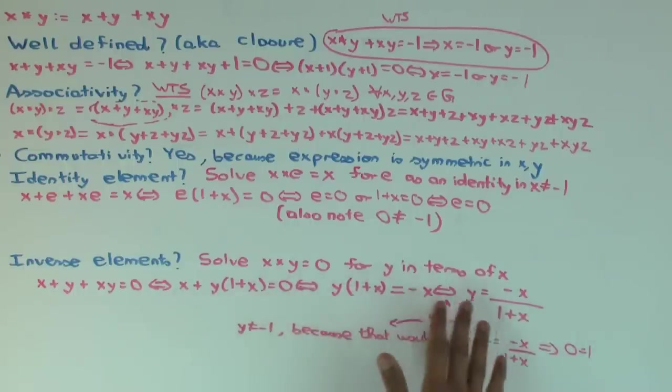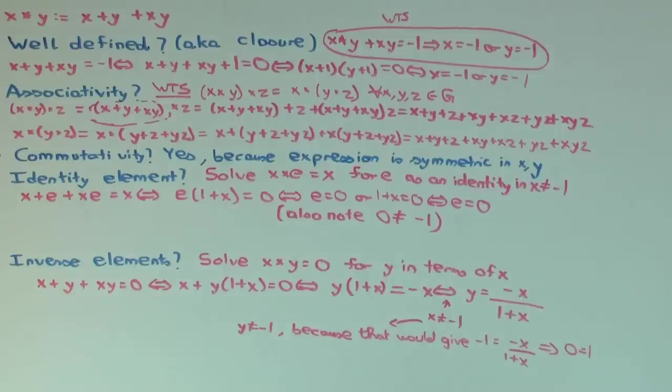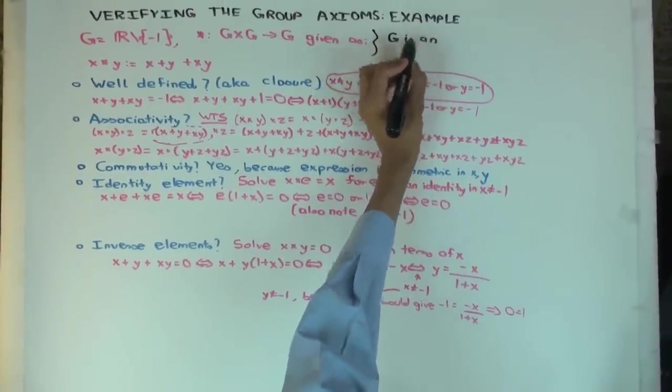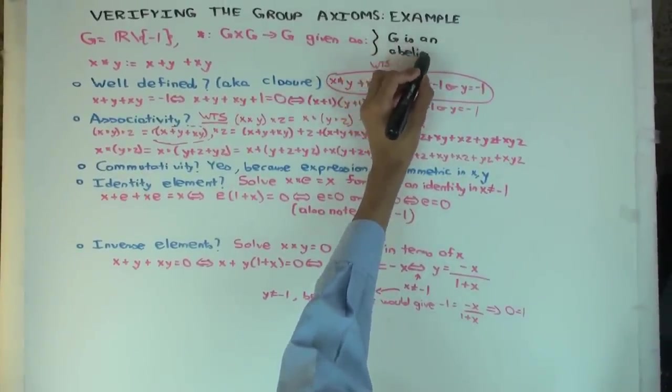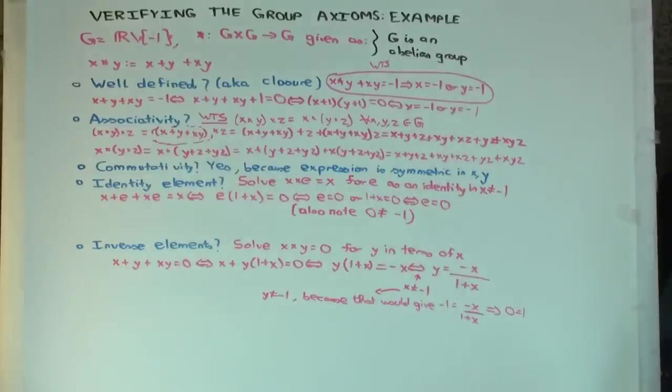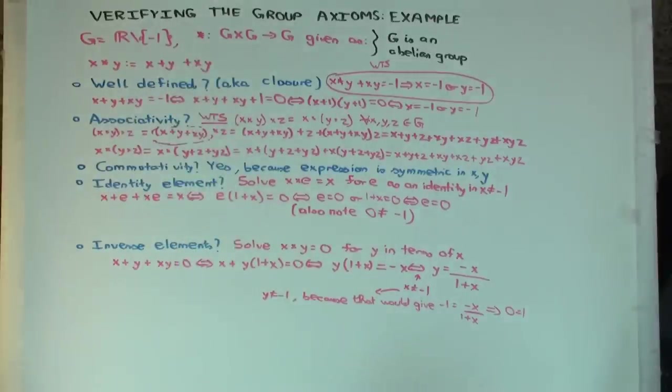Because I put these two-way implication signs, you actually can conclude that this actually is the inverse. So we've shown associativity, identity element, and inverses, but we also showed something bonus. We showed commutativity. So this actually is an Abelian group. Now there's actually a deeper reason why this formula works. It looks like a very mysterious formula. Why would this be a group? But there's a reason, but we cannot go into that right now. So let's stop here.